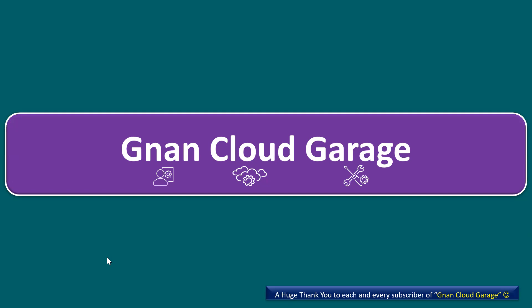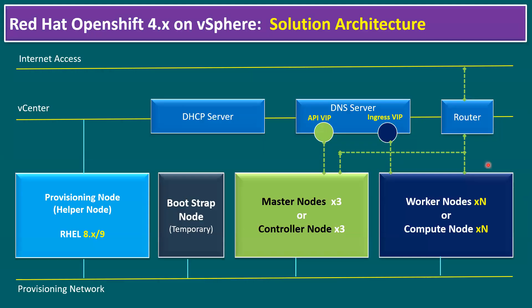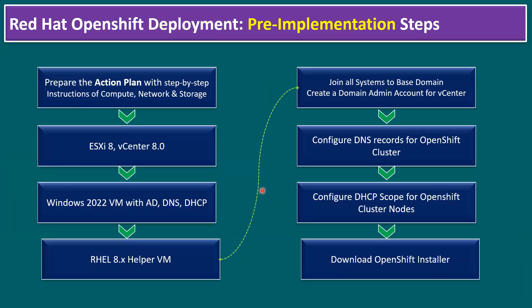Hi everyone, welcome to Grand Cloud Garage. In this session I'm going to talk about a step-by-step guide for installing OpenShift cluster 4.13 on a single ESXi host 8.0. In our previous session we talked about pre-implementation steps and the implementation procedure. We already covered the solution architecture and the IP address list.